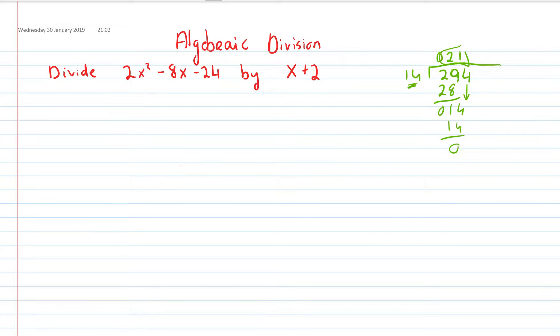Okay. But we're going to do the exact same in this except it's in algebra. So let's go. So we have our 2x squared minus 8x minus 24. And we're going to divide that by x plus 2.